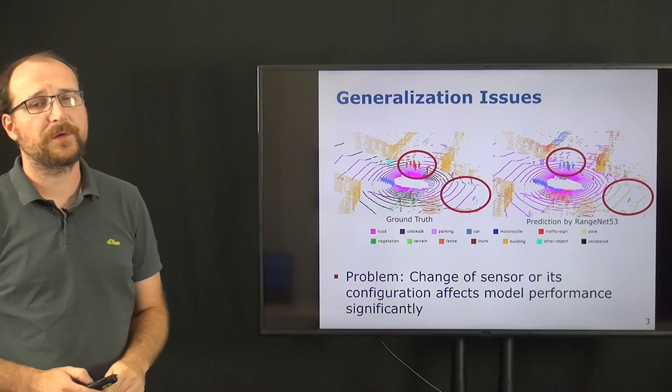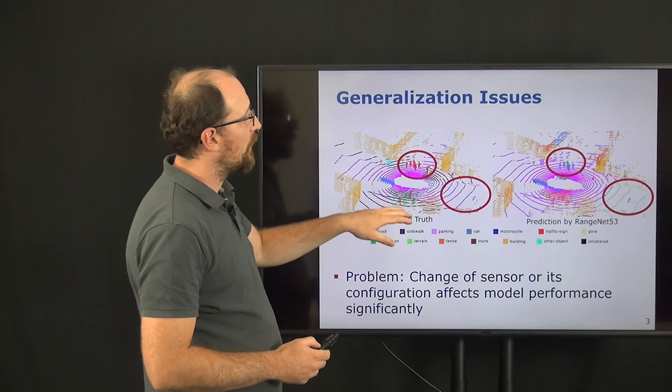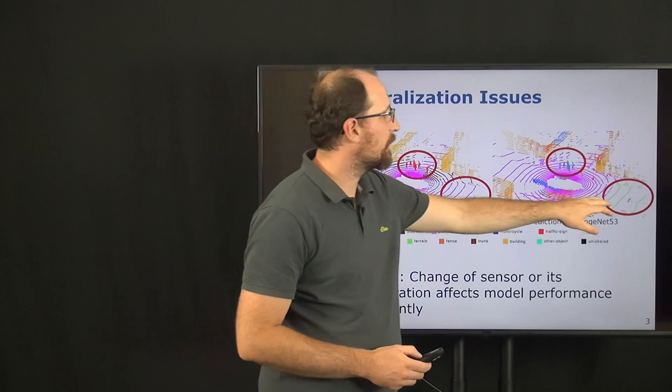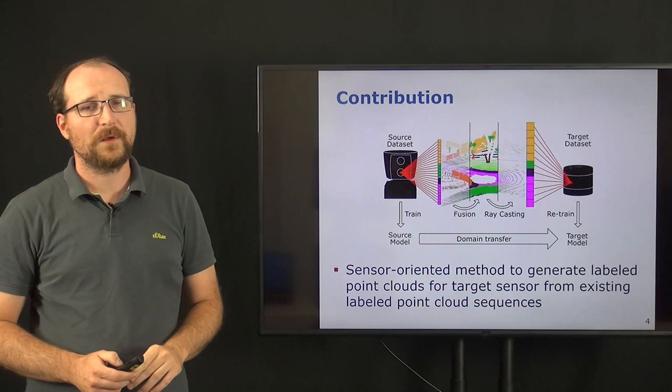Furthermore, we can see that also the ground surface, which would provide the car with information about the navigable space, are also wrongly classified. Here we can see that the road surface is wrongly classified as terrain, which would lead to wrong driving behavior in the end.